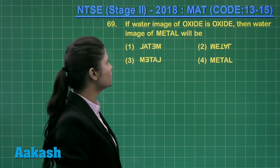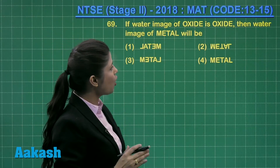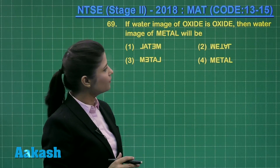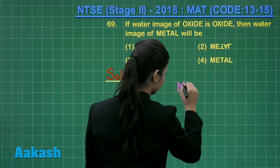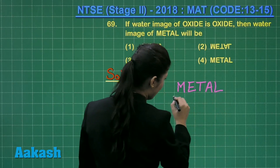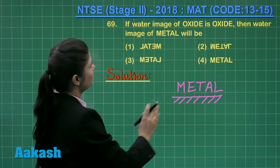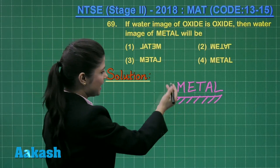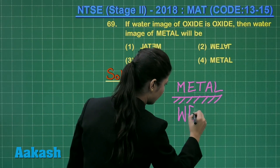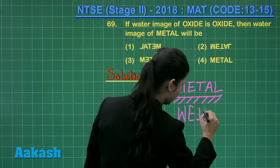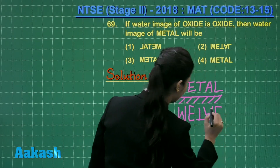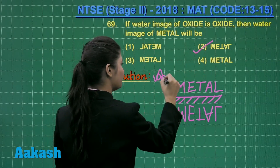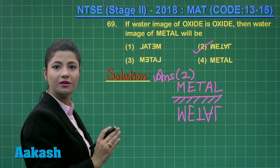Now let us move on to question number 69, which is related to the water image. It states: if the water image of 'oxide' is given as shown, then what is the water image of the word 'metal'? You can write the word metal. As you have to obtain its water image, consider the mirror placed under the object. The reflection obtained is the water image. Looking at the options, option number 2 is found to be the exact water image. So the answer for this question is option number 2, which is the water image of the word metal.